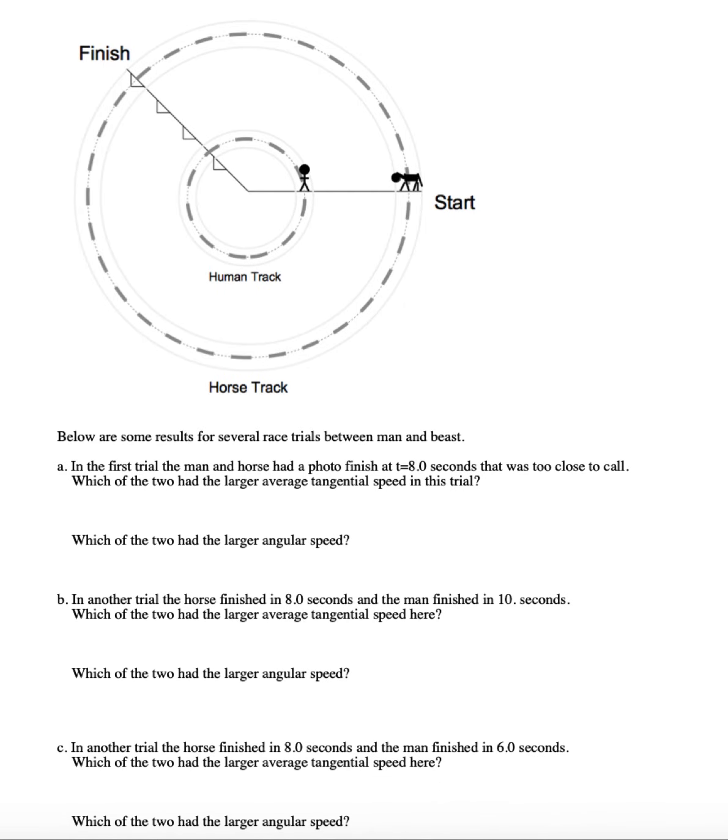Now let's look at some results between man and beast. In the first trial, the man and the horse had a photo finish at t equals eight seconds and it was too close to call. Which of these two had the larger average tangential speed in this trial? So for that we're going to actually use the speed formula from the past: distance traveled divided by time, and we just want to do it for both the man and the horse. So for the man, he's going to go 60 meters in eight seconds - 7.5 meters per second.